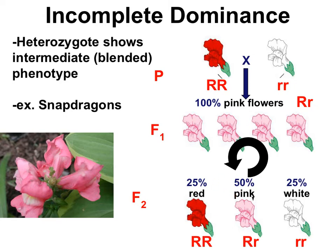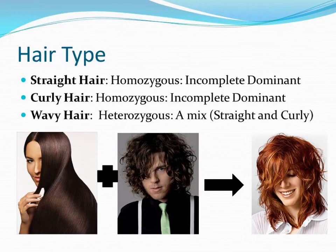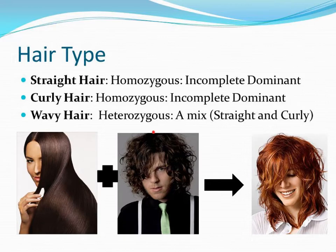Let's look at another example: straight and curly hair in humans. This woman has very straight hair, and if she has an offspring with a man that has very curly hair, the resulting offspring would have wavy hair — an intermediate between straight and curly.